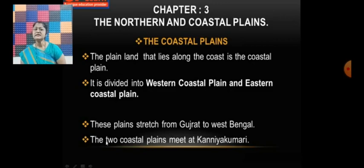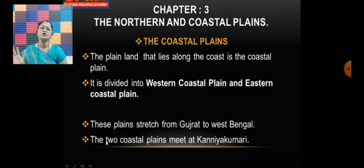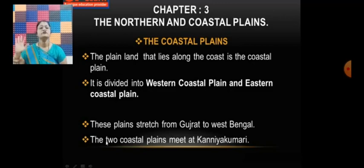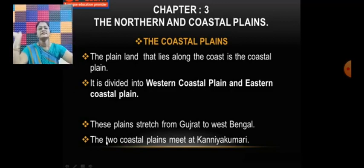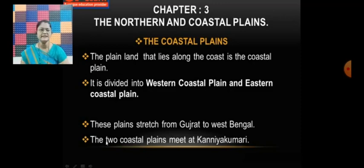The plains land that lies along the coast is called the coastal plains. It is divided into the western coastal plain and the eastern coastal plain. These plains stretch from Gujarat to West Bengal. The two coastal plains meet at Kanyakumari — both the eastern and western coastal plains meet at Kanyakumari.